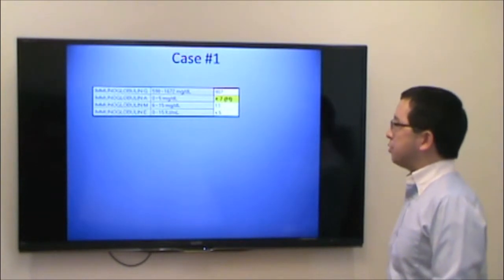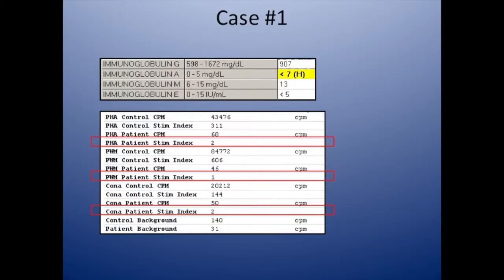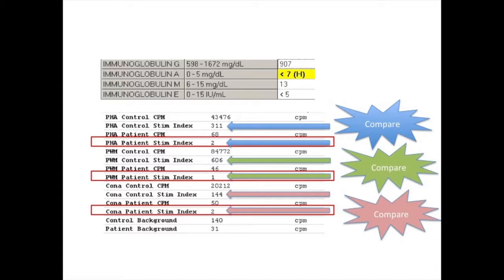This patient also had immunoglobulin levels drawn. The IgG level was normal, but remember this is a three-month-old, so the IgG is likely maternal in origin. T cell function was assessed by lymphocyte proliferation in response to the mitogens PHA, pokeweed mitogen, and ConA. The patient had a stimulation index of 2, 1, and 2, compared to the control patient's stimulation index of 300, 600, and about 150 — markedly reduced lymphocyte function.